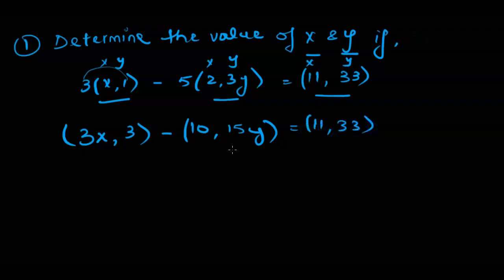Now whenever we have to solve for x and y all we have to do is just separate out x and y values. So this is x, this is x, and this is x. So we would separate out the x coordinates and you have 3x minus 10 equal to 11. Similarly we can separate out the y coordinates and we can get 3 minus 15y equal to 33.